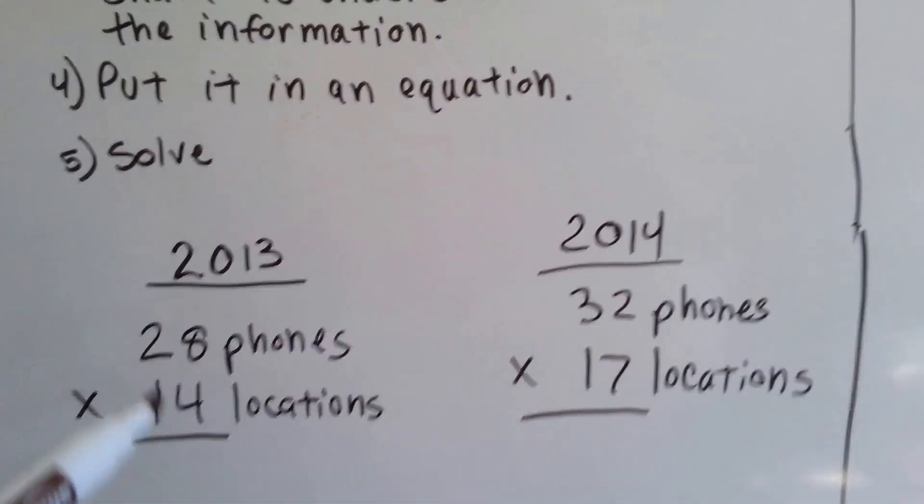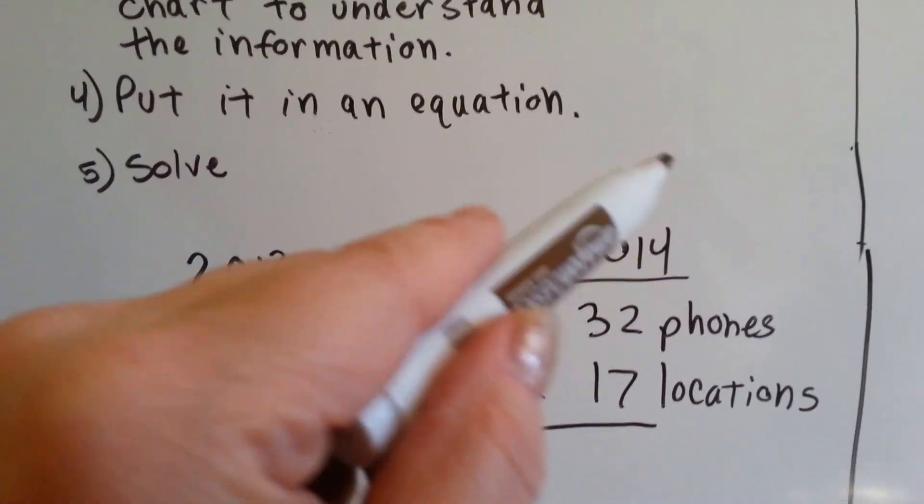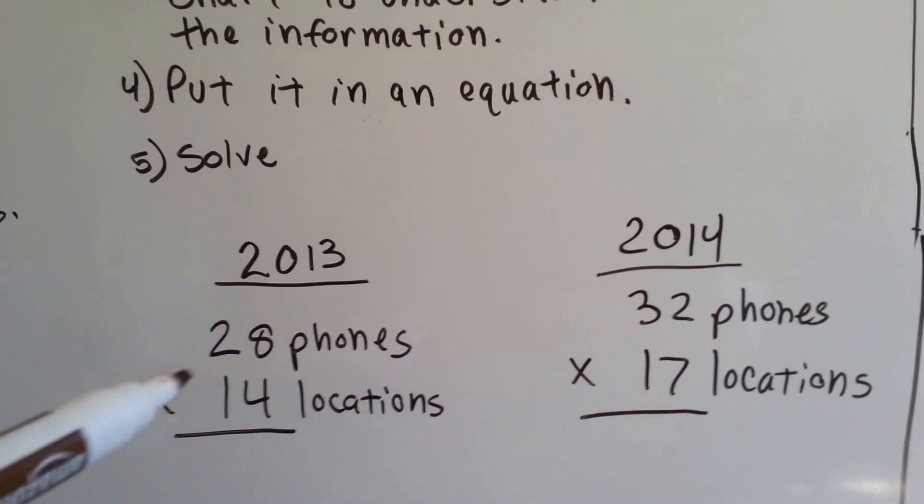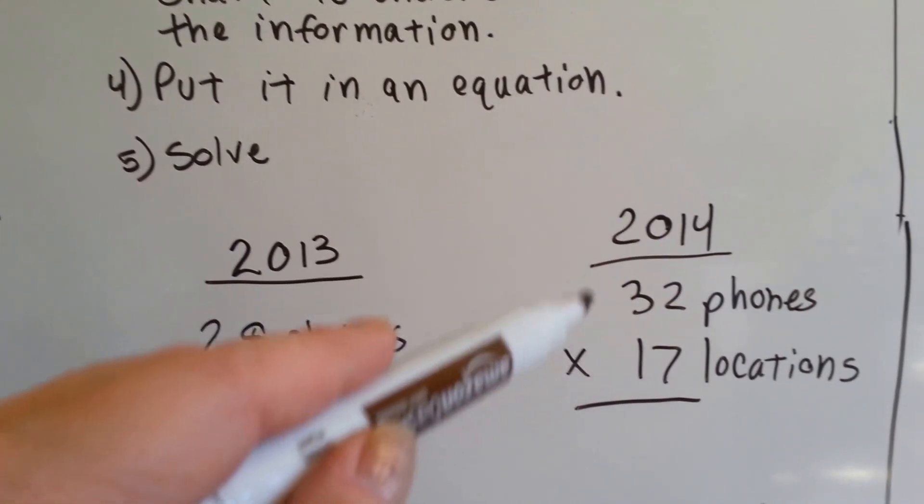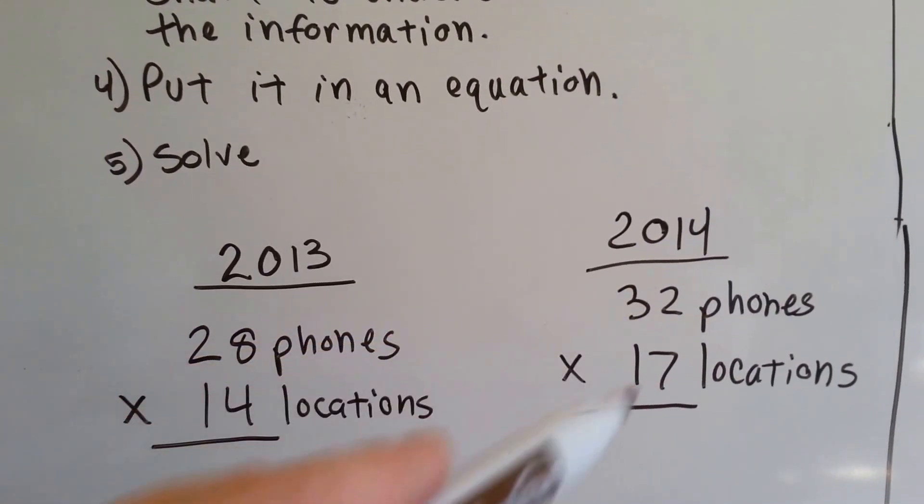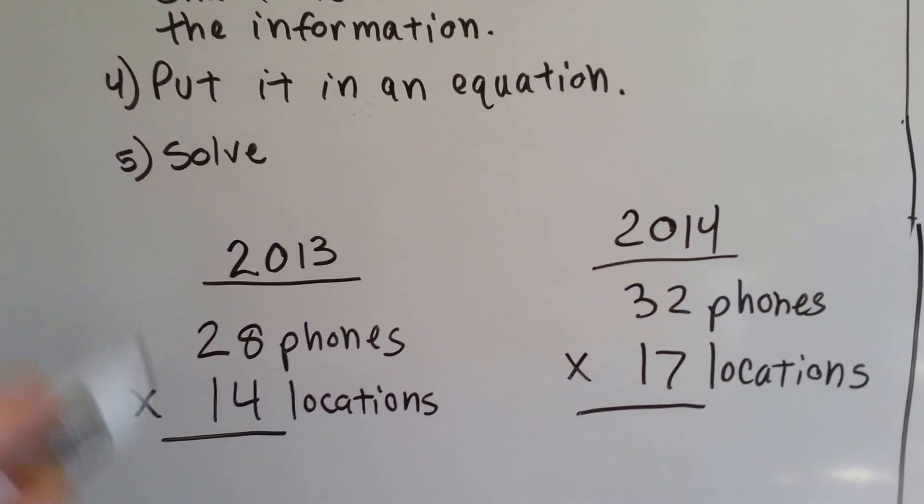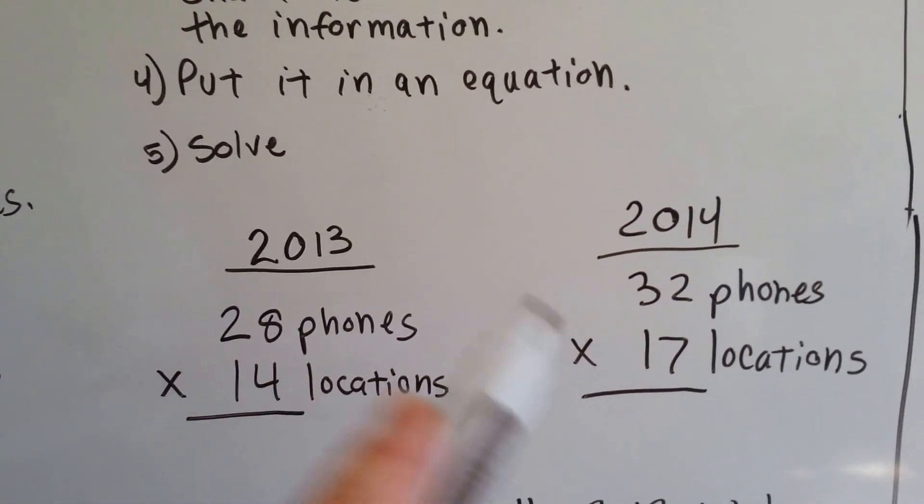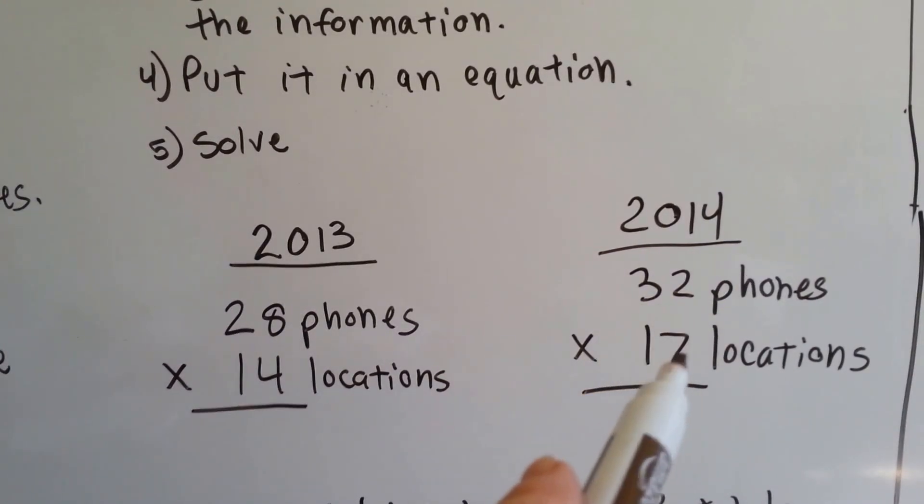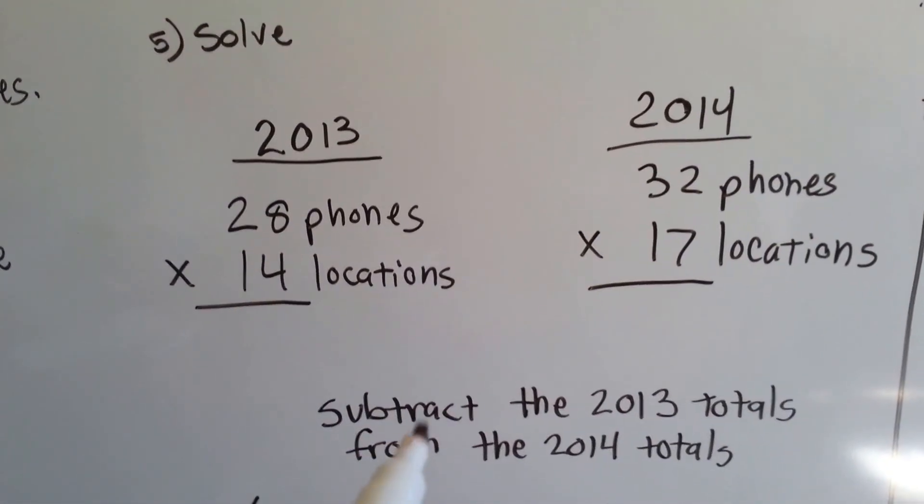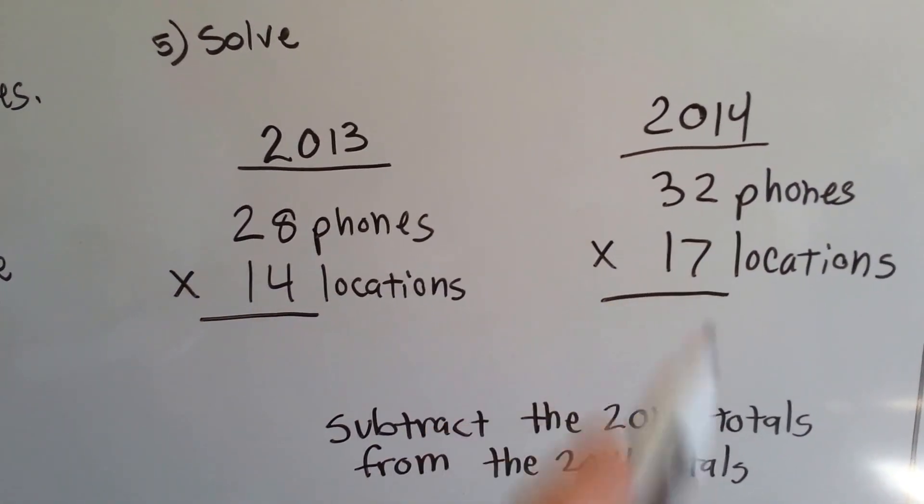And here's our chart. Here's the year 2013. Here's the year 2014. In 2013, she sold 28 phones in 14 locations. In 2014, she sold 32 in 17 locations. So we need to multiply these. Once we multiply these and get the answers, we need to find out how many more were sold in this year than that year. So we need to subtract this number from that number.